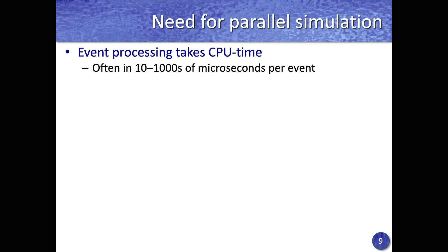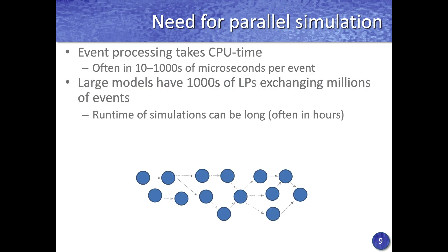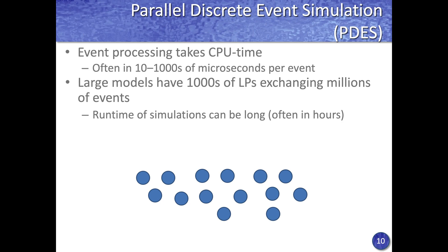Event processing can take quite some CPU time — some event processing can take thousands of microseconds on modern gigahertz CPUs. Large models can have thousands of logical processes exchanging millions of events, and the runtime of these simulations can be pretty long. Consequently, parallel simulation methods are used.